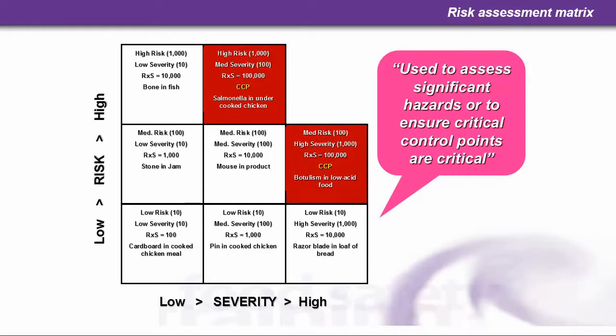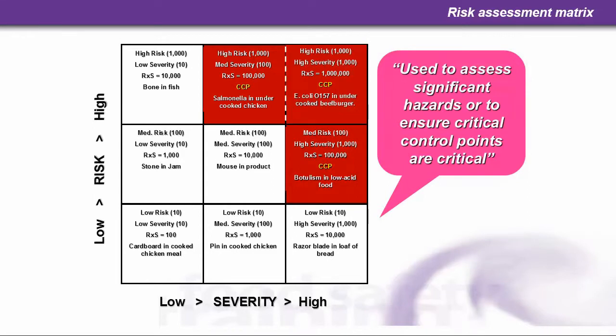Moving into the red areas of the matrix — high risk and medium severity gives a combined score of 100,000. Both Salmonella in undercooked chicken and Botulism in low-acid food fall here and are critical control points. At the top, high risk and high severity gives a score of 1,000,000 — another critical control point: E. coli O157 in an undercooked beef burger.